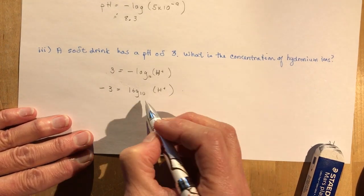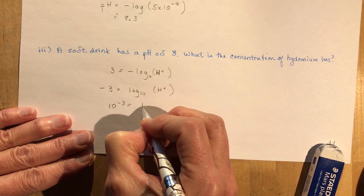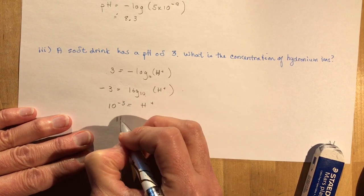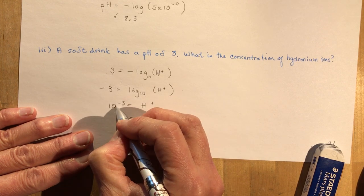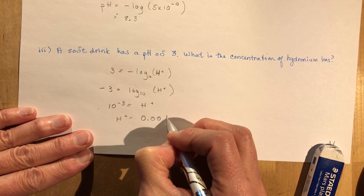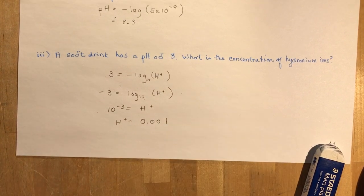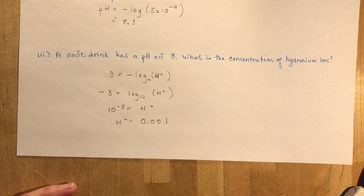So 10 to the negative 3. There we go. So 10 to the negative 3 is equal to the h plus. So h plus is equal to 10 to the negative 3, so 0.001. And there you go. That's some of these crazy word problems dealing with applications.